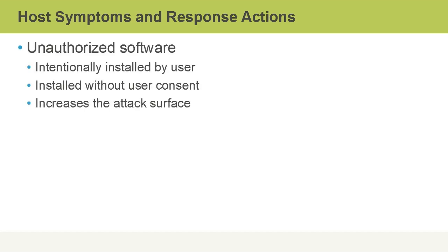Unauthorized software is software that was not installed by the user — usually the user didn't install it, or if they did, they thought it was something else. It might have looked benign, like a Trojan horse, but really it's malware. In the Windows world, User Account Control, or UAC, is designed to prompt the user and prevent things from being installed without user consent.